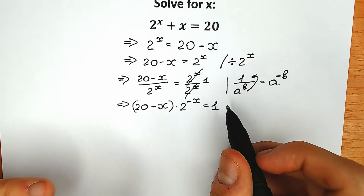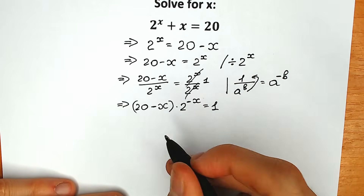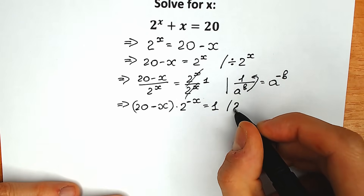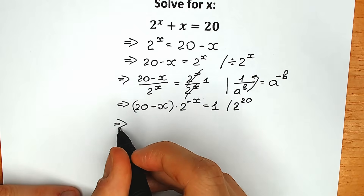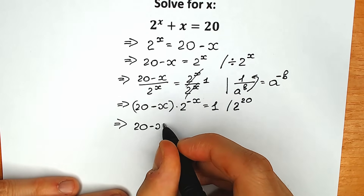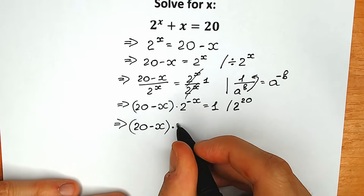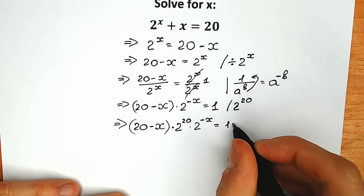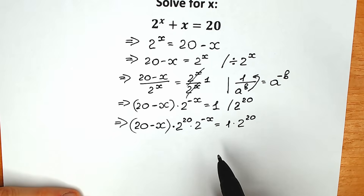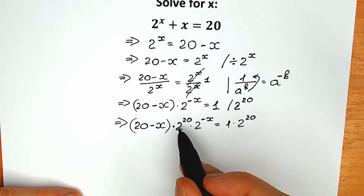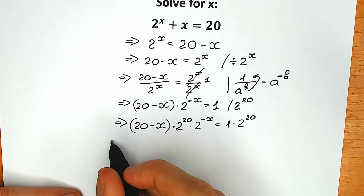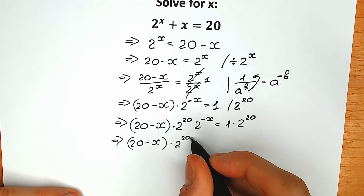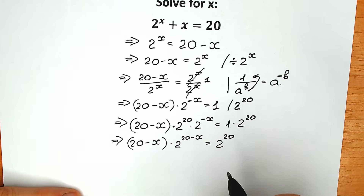Now I'm going to apply the Lambert W function in a few steps, but first we need to prepare our expression. I'll multiply both sides by 2 to the power 20. As a result we have (20 minus x) times 2 to the power 20 times 2 to the power minus x on the left, equal to 2 to the power 20 on the right. Since we have the same base with multiplication, we add the powers, giving us (20 minus x) times 2 to the power (20 minus x) equal to 2 to the power 20.